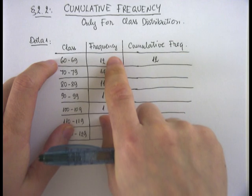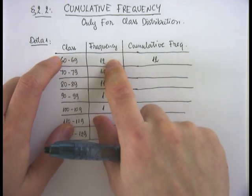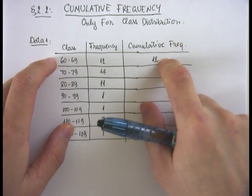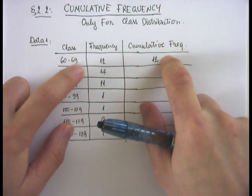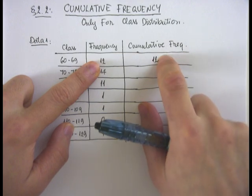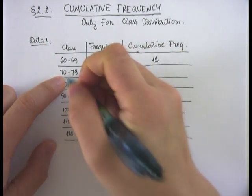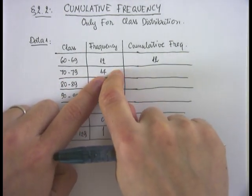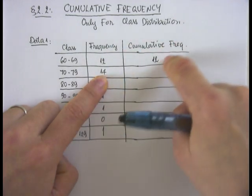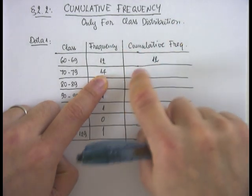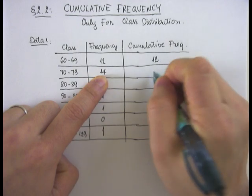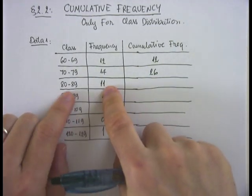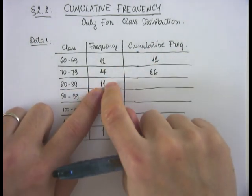The idea of cumulative frequency is the total of the frequency in that class together with all the frequencies below that class. For the next class, the actual frequency is 14, but together with all classes below it, the total is 14 plus 12, which makes 26.